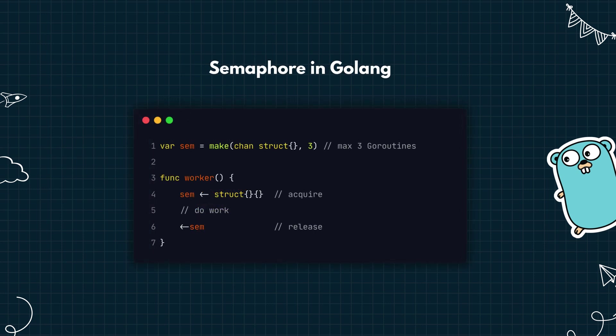Here is a semaphore in Go using a buffered channel. The capacity here is 3, meaning only 3 goroutines can enter at a time. When a worker acquires a slot, it sends an empty struct into the channel. When it is done, it receives from the channel to release the slot.